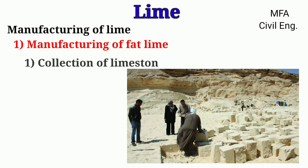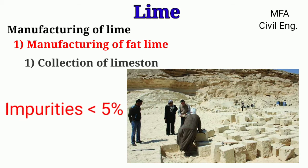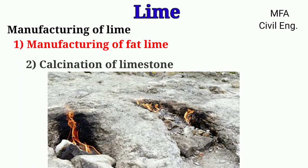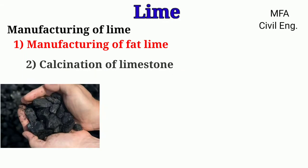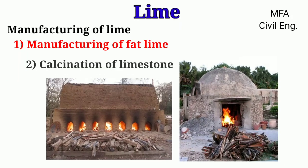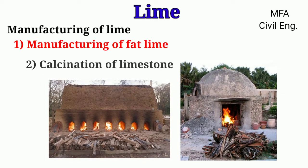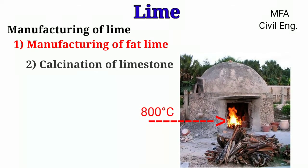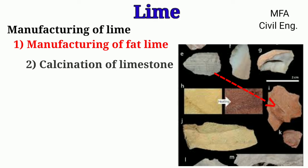Limestones are collected at a site. In the case of fat lime, the percentage of impurity should not be more than 5 percent. Calcination means the burning of limestone. Fuels like coal, charcoal, coal ash, or firewood are used for calcination. The burning of limestone can be done either by a clamp or a kiln. The temperature should be maintained at 800 degrees Celsius for proper burning, and there should be no over-burning or under-burning.